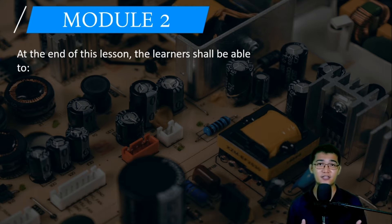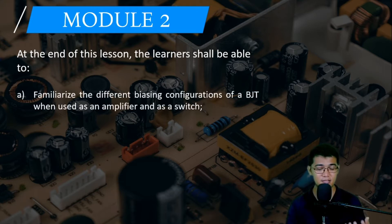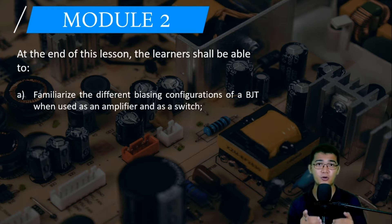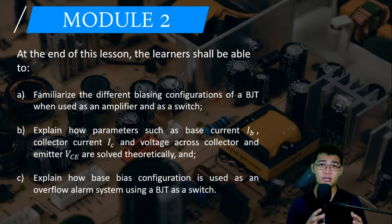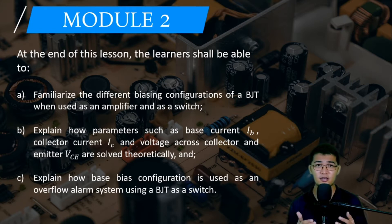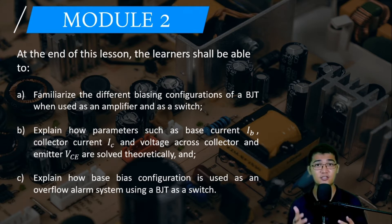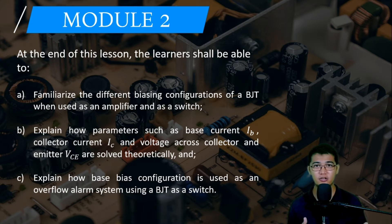In this video we will start by discussing how to bias our transistor so that it will work as an amplifier, and then we will transition to our main topic: how to use a BJT as a switch. We'll also discuss a water overflow alarm system utilizing a BJT.